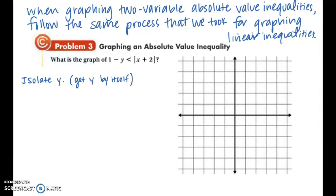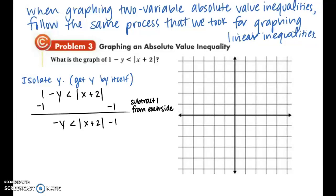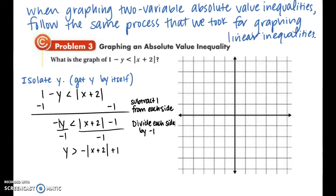Example 3: the equation 1 minus y is less than the absolute value of x plus 2. First, isolate y. Subtracting 1 from each side gives negative y is less than the absolute value of x plus 2 minus 1. Then divide both sides by negative 1 — and remember, when you divide by a negative, the inequality symbol switches direction. This gives y is greater than negative absolute value of x plus 2 plus 1. The negative sign goes in front of the absolute value; the values inside the absolute value do not change; and the negative 1 becomes positive 1.